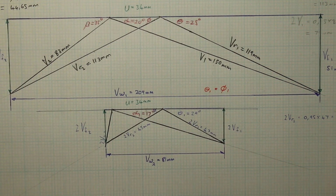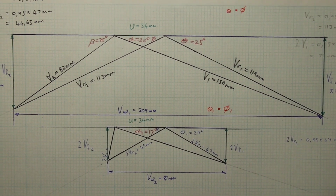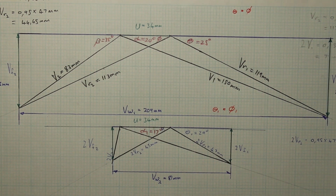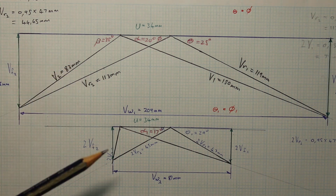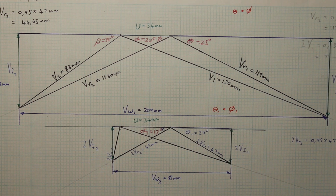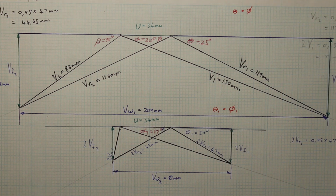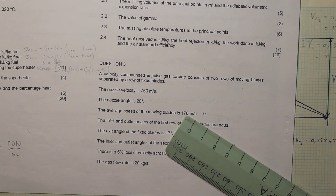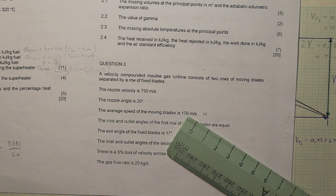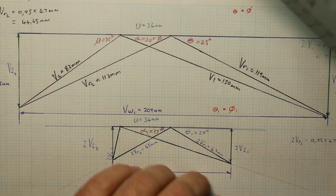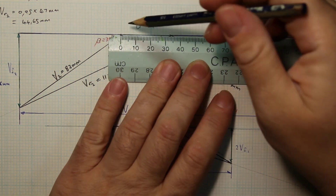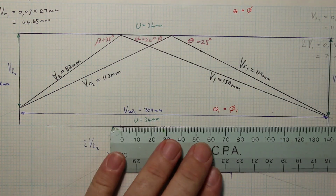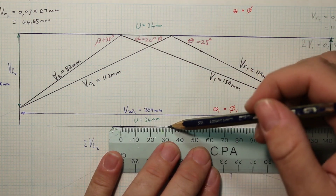I'll quickly show how I constructed this diagram, going from the first row to the second row. First, I drew the average speed of the moving blades: 170 meters per second divided by the scale of 5 meters per second gives 34 millimeters. I measured off 34 millimeters for the first row, and since the blade speed is the same for the second row, I drew 34 millimeters straight down for that as well.